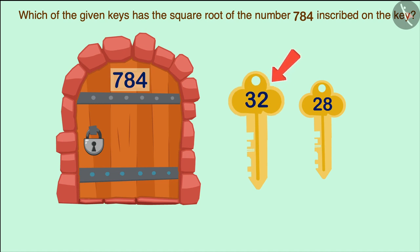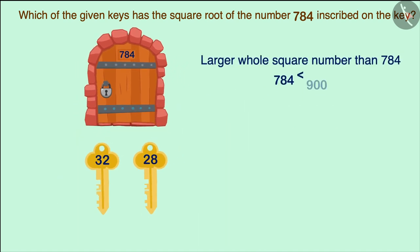Will the square root of 784 be 32? Let us guess the square root of 784. We take a larger whole square number than 784. We know that the square of 30 is 900. That is, the square root of 900 is 30.